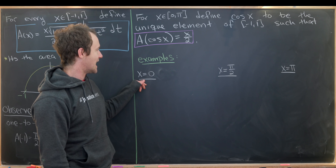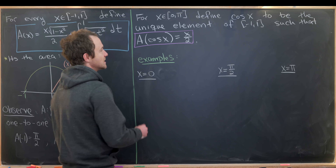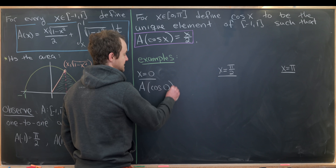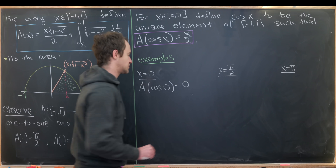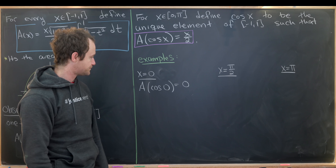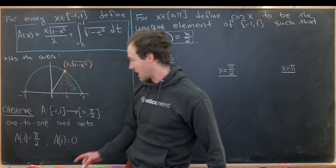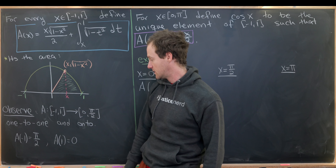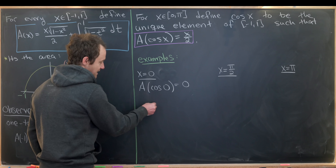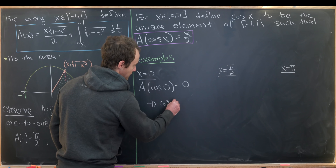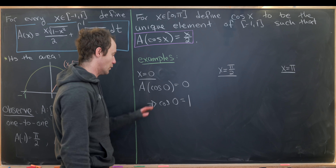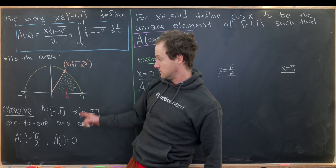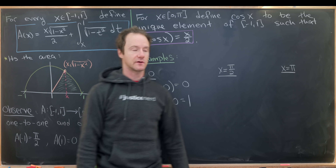Let's see what happens when x equals zero. We should have A of cosine of zero equal to zero over two, which is zero. Looking back at our picture and the special values we calculated, cosine of zero must equal one, because that's the value that creates no area under the curve.